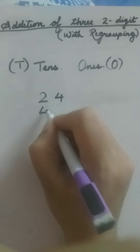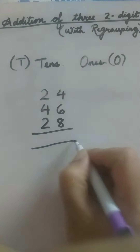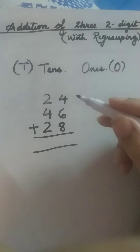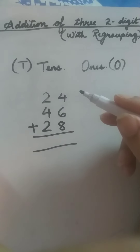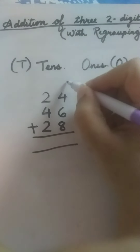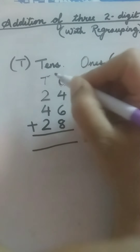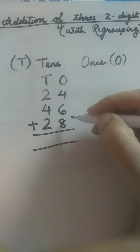Now let us start our first question. Our question is 24, 46, and 28 — we are going to add them. When we start our addition, we always write the places on top. Our first place is ones, and we are going to write that ones place on the right side. Our next place is tens, which will come on the left side of ones.